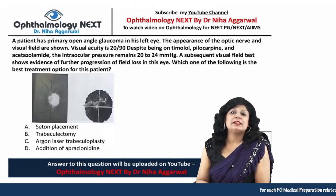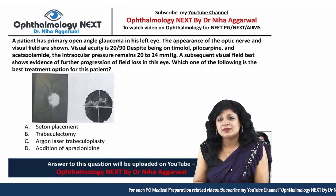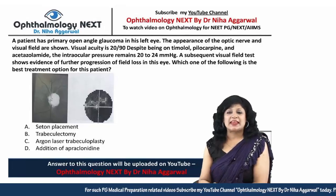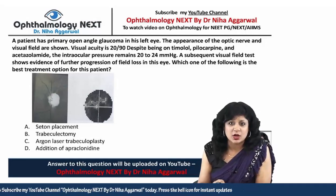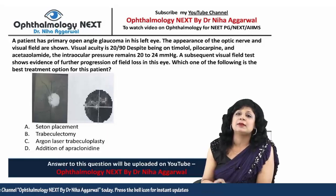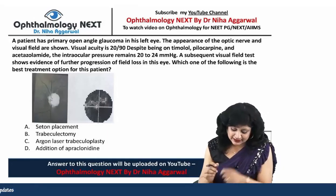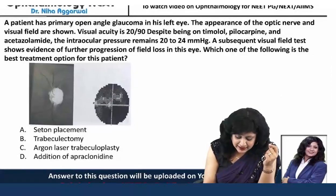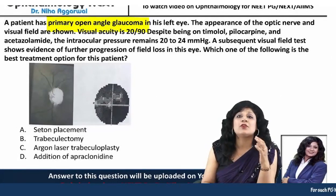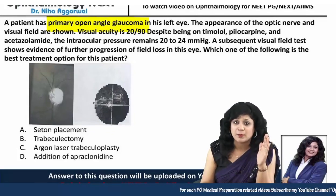Hello guys, welcome to the NEET PG 2021 pattern questions. Here we have another question that I asked recently in the quiz, and new people requested a video explanation. A patient has a primary open-angle glaucoma — they have already given you the diagnosis.